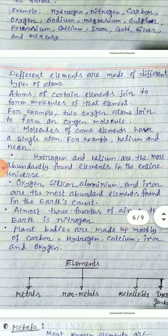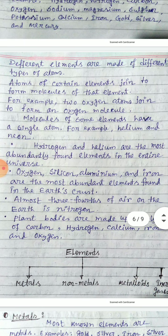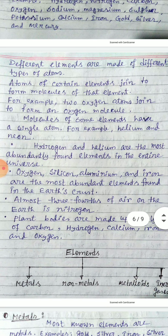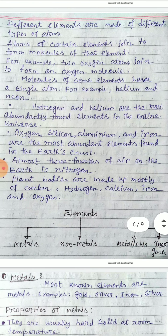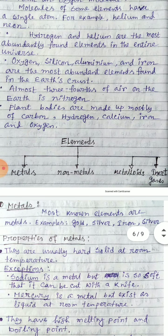Classification of elements: elements can be classified as metals, non-metals, metalloids, and inert gases.